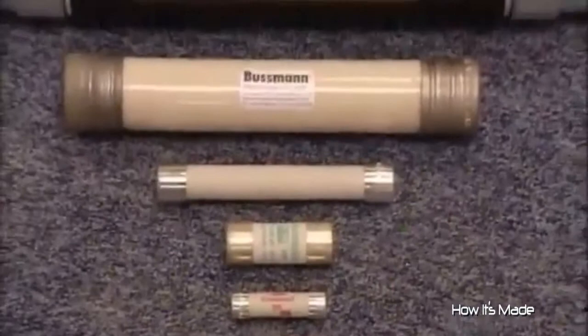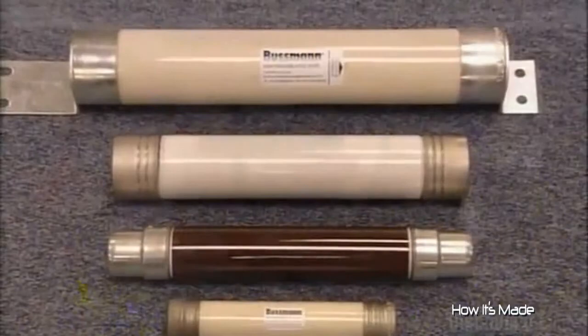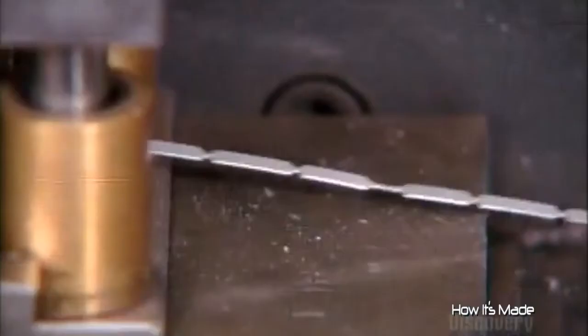Choosing the right fuse depends on your current needs. To make a high voltage fuse, this machine cuts notches in a long silver strip, which will serve as its element. The notches will help control the way the fuse blows.